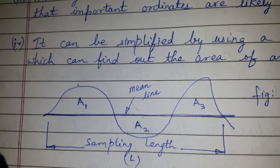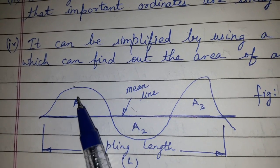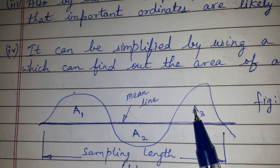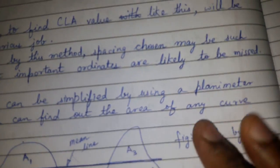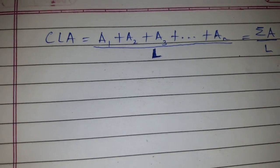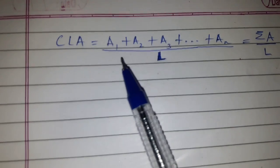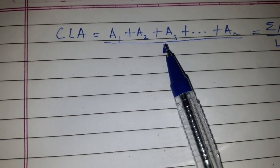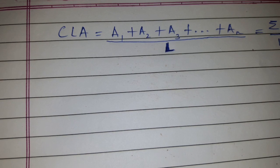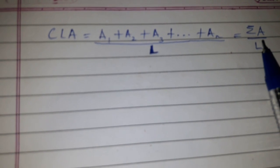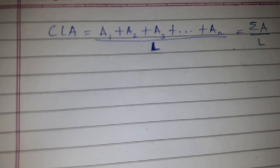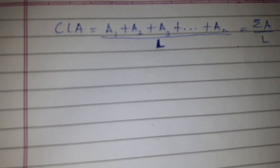planimeter. Planimeter is used to find the area of all the curves and with that another formula can be used for calculating CLA, which goes like this: CLA is equal to a1 plus a2 plus a3 up to an divided by capital L, that is the sampling length, which is equal to summation of area divided by capital L.